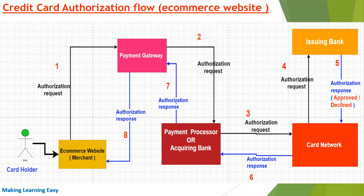The payment gateway validates the request — checking if all necessary fields are present. It also applies fraud check mechanisms if configured, and applies manual rules such as a maximum price per order. Once everything is fine with the request, the payment gateway sends the request to the payment processor.